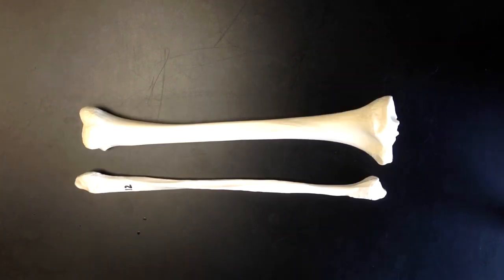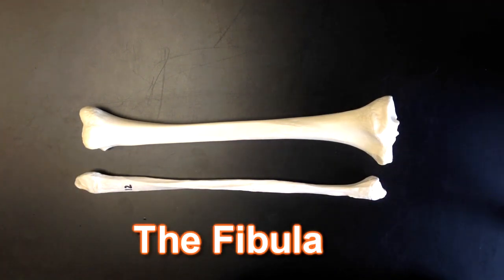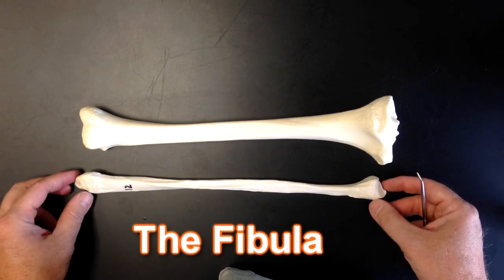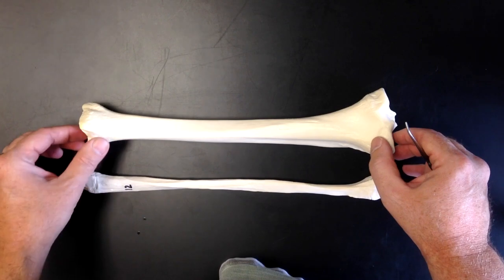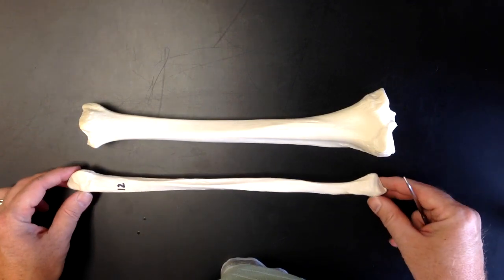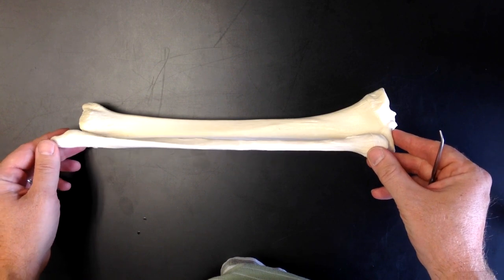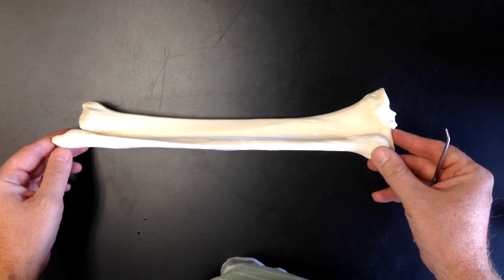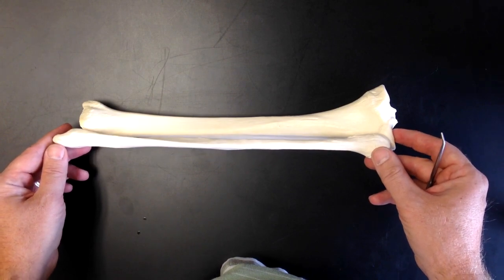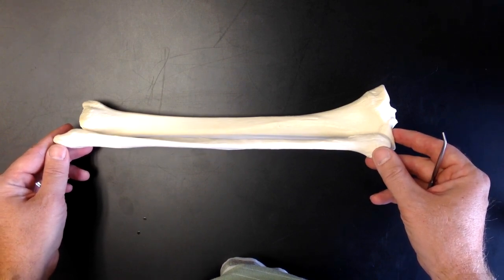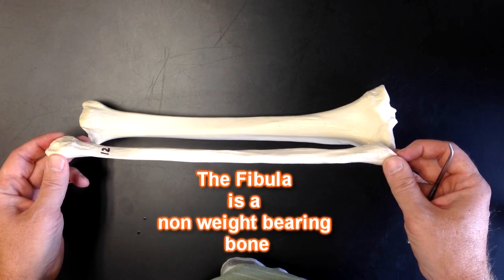Here we can see a fibula located next to a tibia, so you can orient yourself as to where it would go. On the tibia we have these two smooth articular surfaces right there. Those articular surfaces would be where the fibula attaches. Okay, so this is the fibula. You'll notice it's a lot thinner, narrower than the tibia.